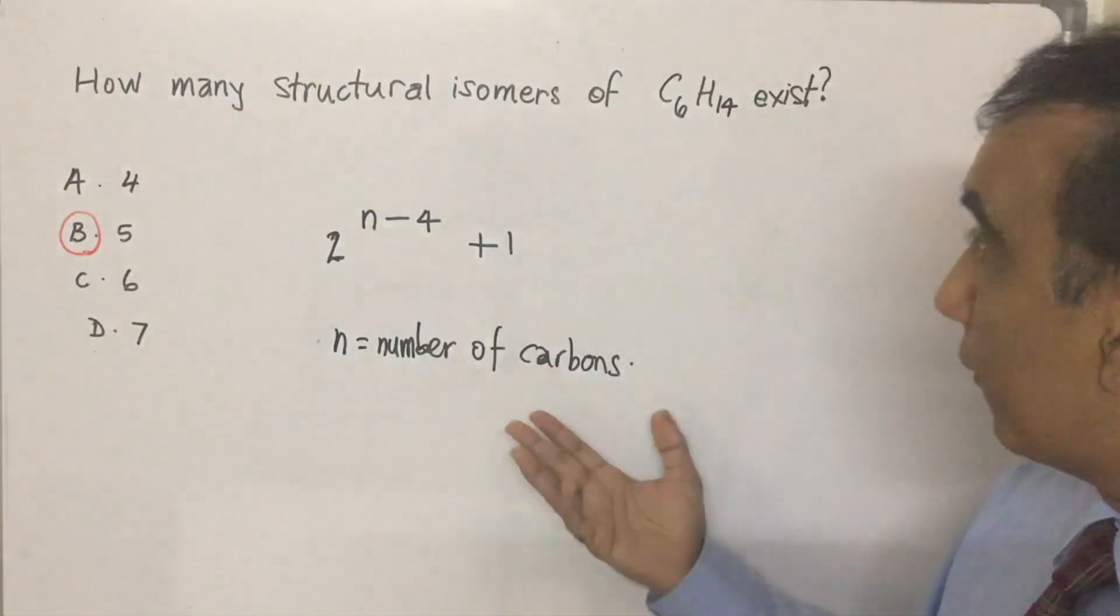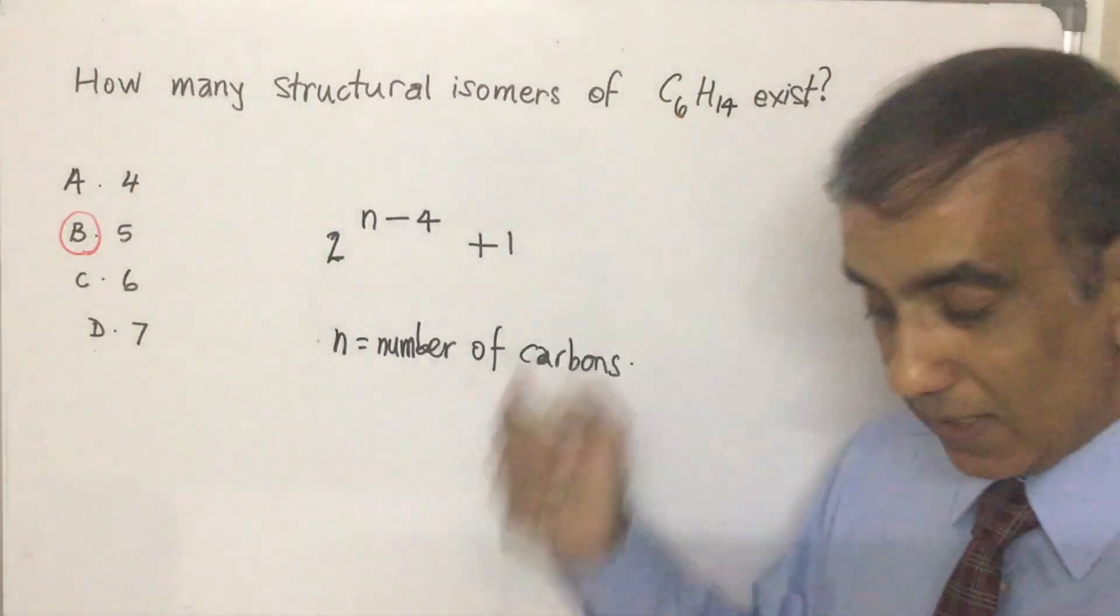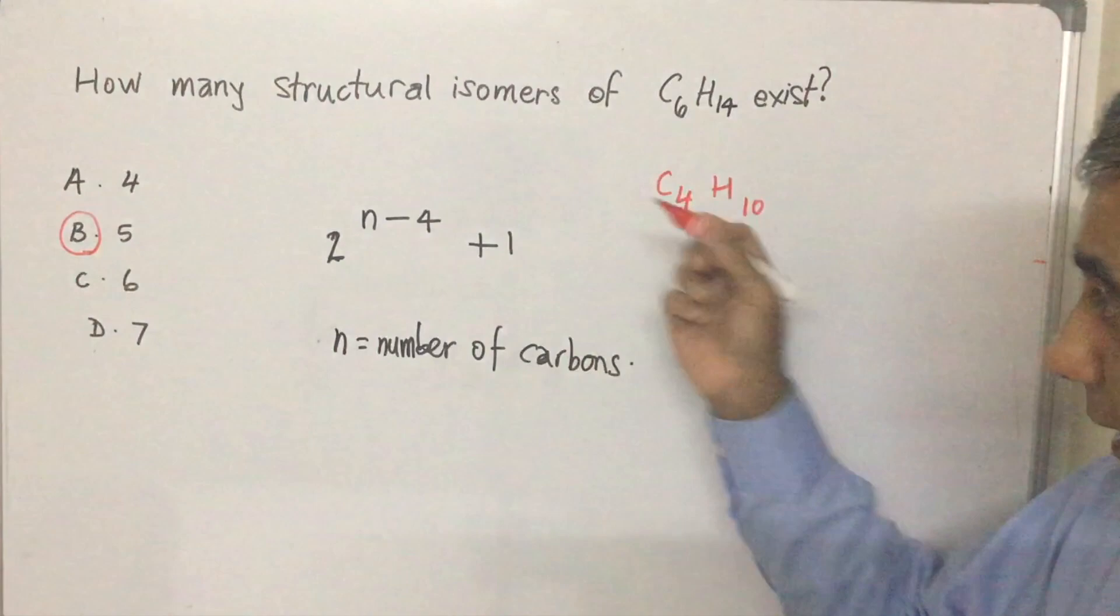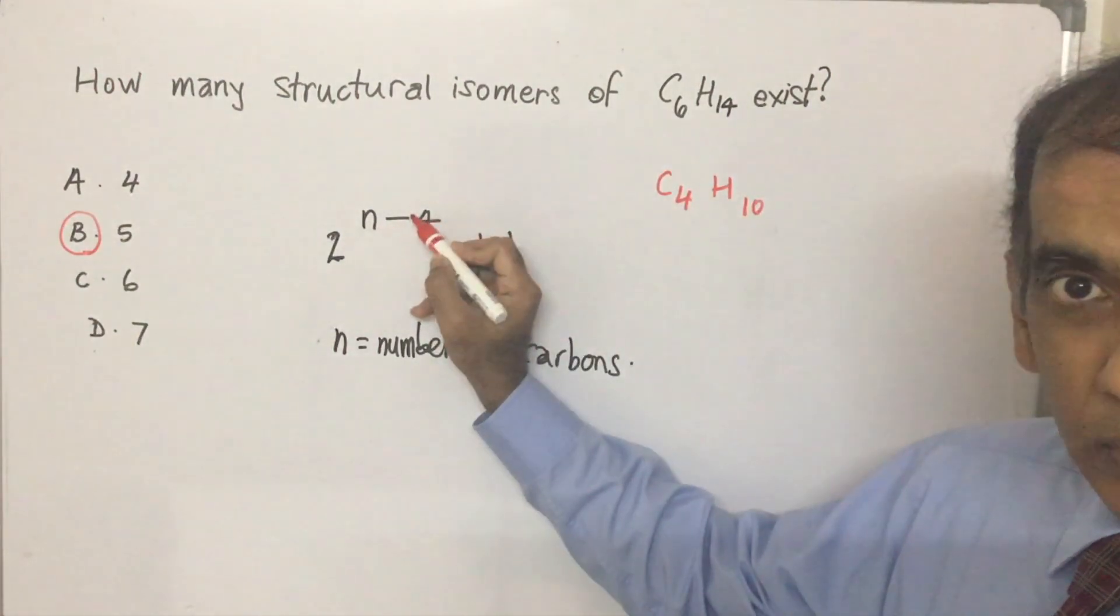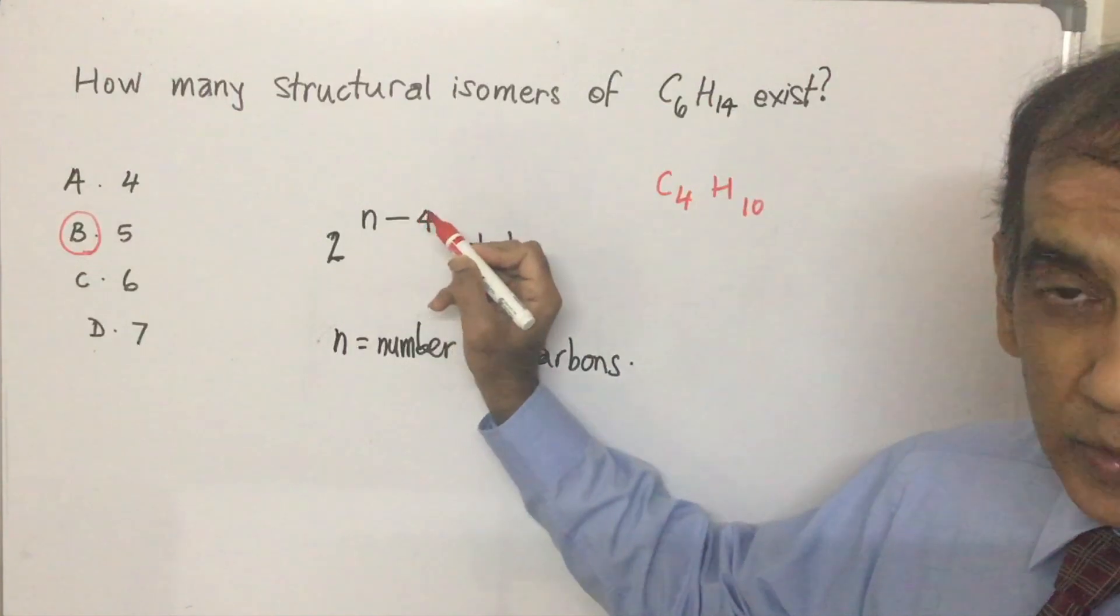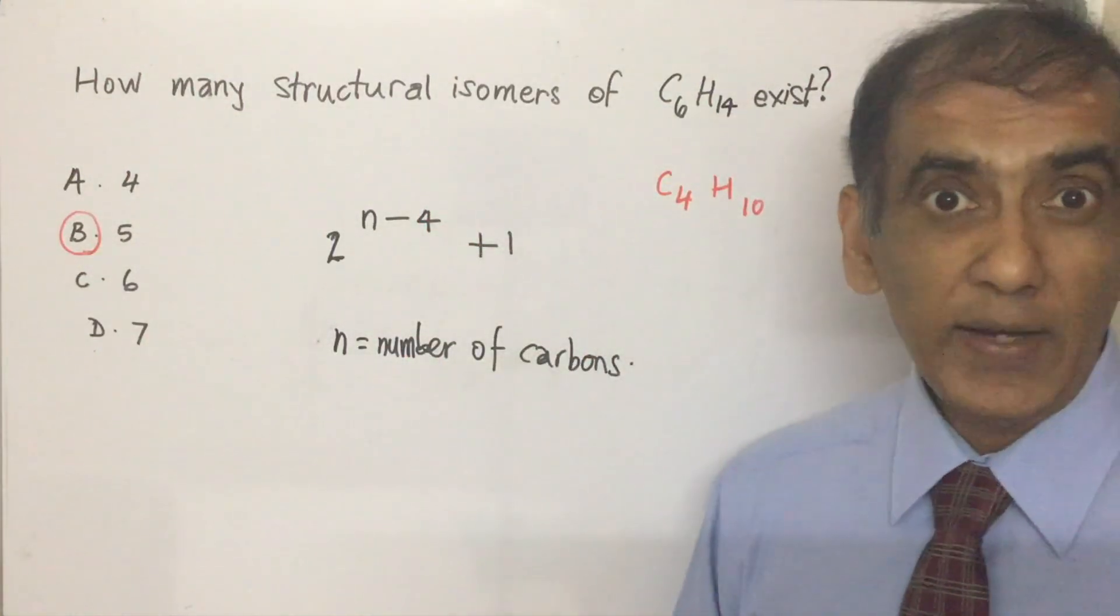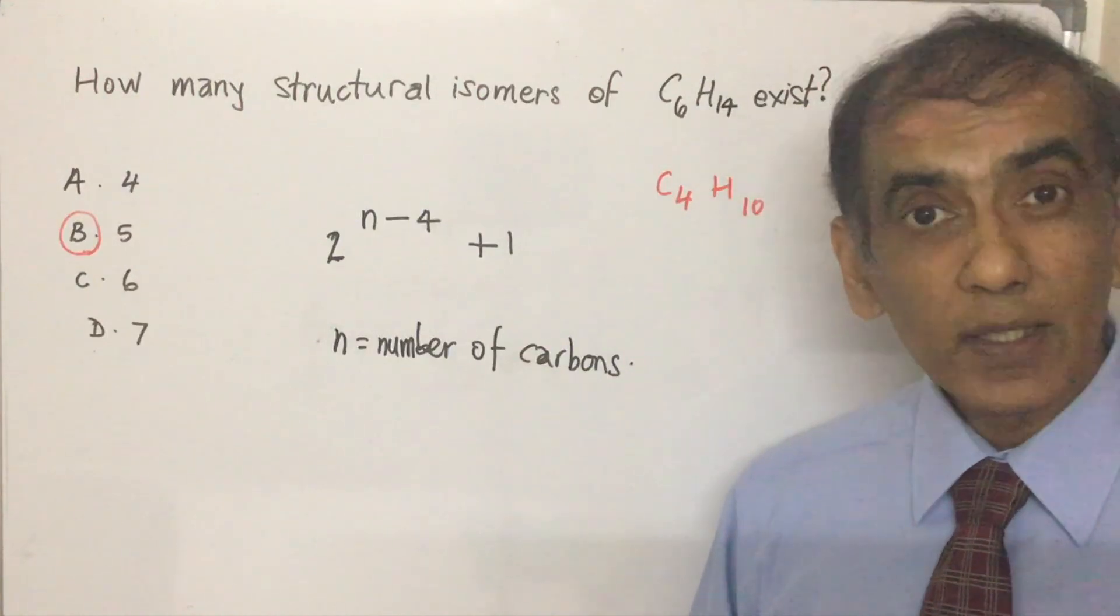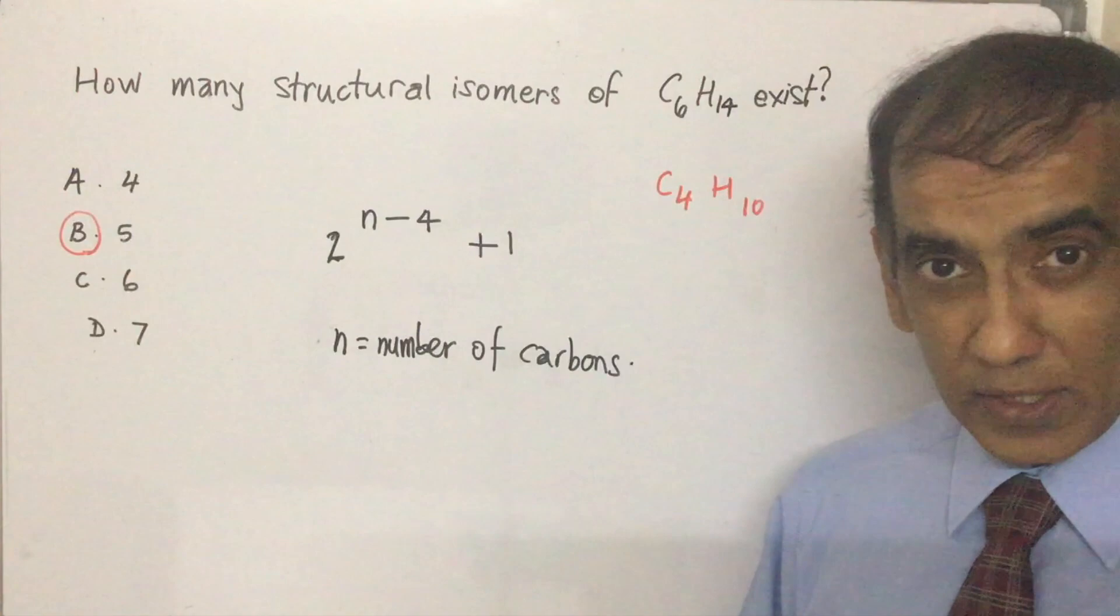Does this formula apply for if this is C4H10, let's say? That would be butane. Then it will be 4 minus 4, which is 0. 2 to the power of 0 is 1. 1 plus 1 is 2. And there are, in fact, two isomers of butane. You can draw those two isomers of butane right now to see if it's true.